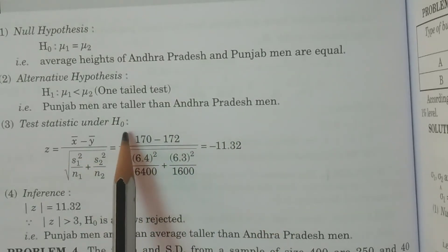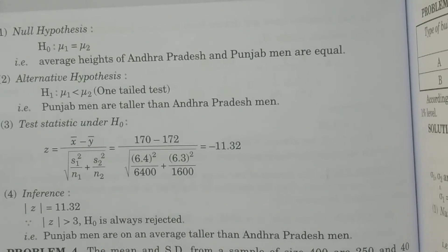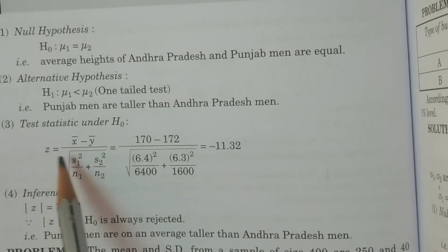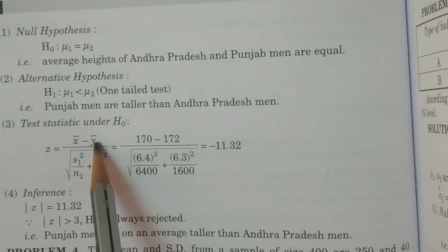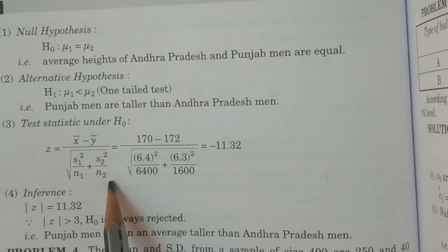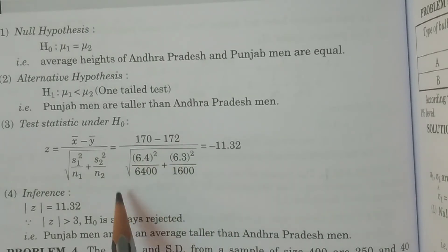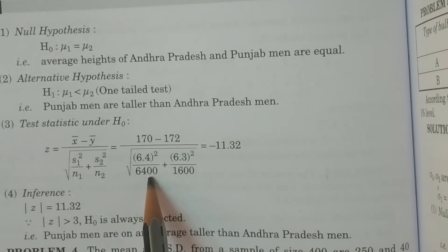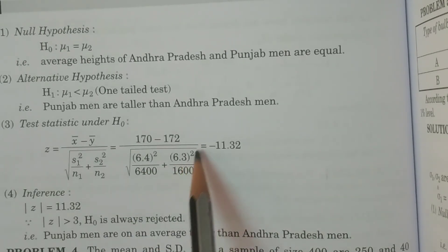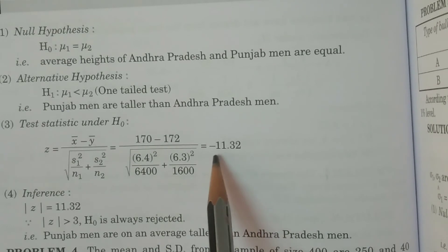Under H0, for the case where sigma one and sigma two are not known, the test statistic is: z = (x̄ − ȳ) / √(s1²/n1 + s2²/n2). Substituting: z = (170 − 172) / √(6.4² / 6400 + 6.3² / 1600). Calculating this gives z ≈ −11.32.